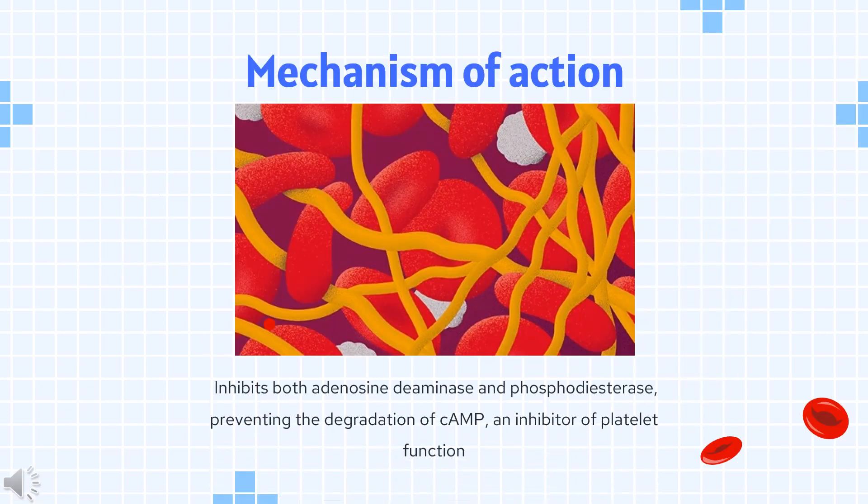Mechanism of Action. Dipyridamol likely inhibits both adenosine deaminase and phosphodiesterase, preventing the degradation of cAMP, an inhibitor of platelet function. This elevation in cAMP blocks the release of arachidonic acid from membrane phospholipids and reduces thromboxane A2 activity. Dipyridamol also directly stimulates the release of prostacyclin, which induces adenylate cyclase activity, thereby raising the interplatelet concentration of cAMP and further inhibiting platelet aggregation.